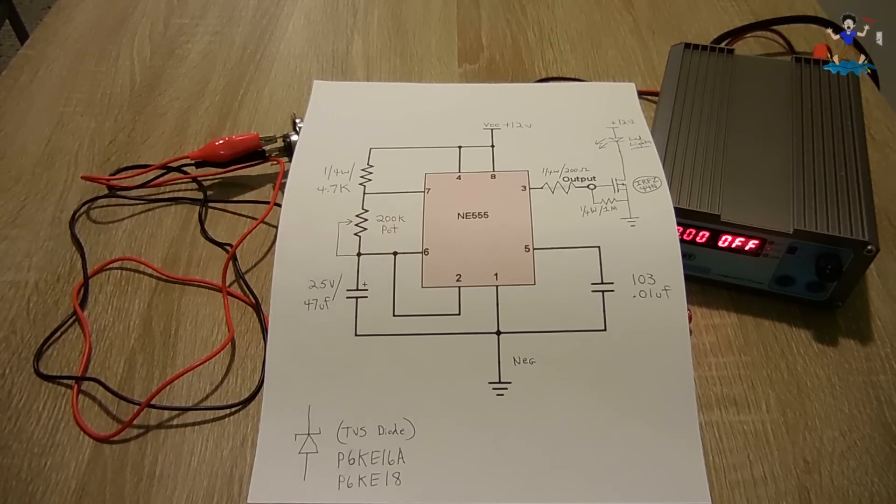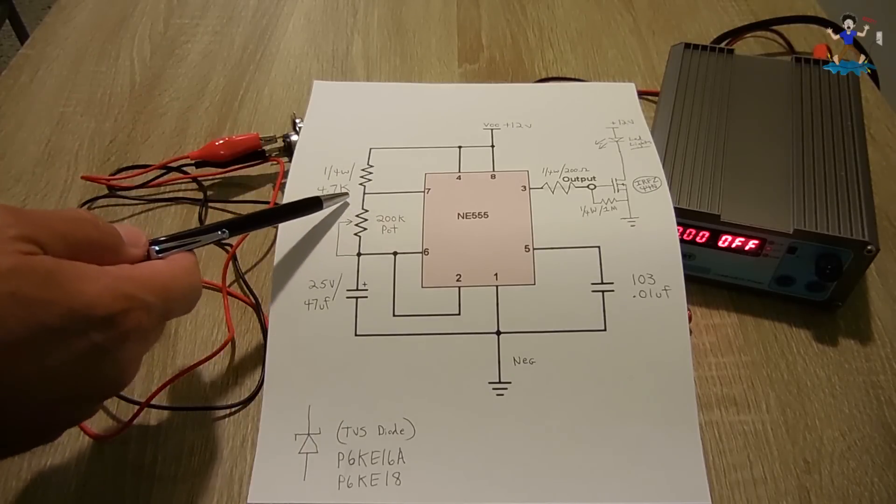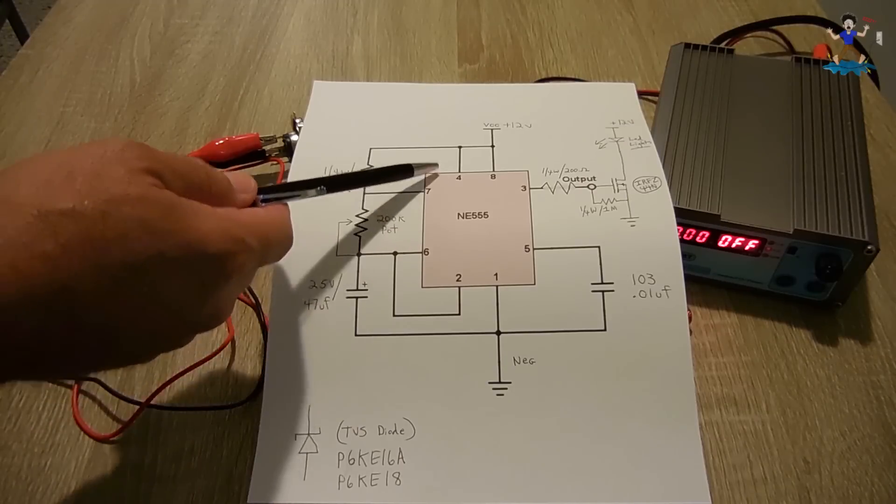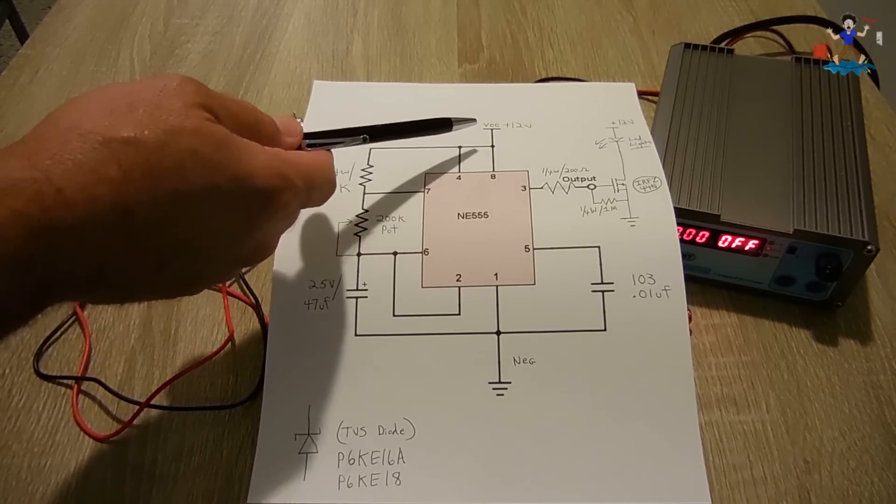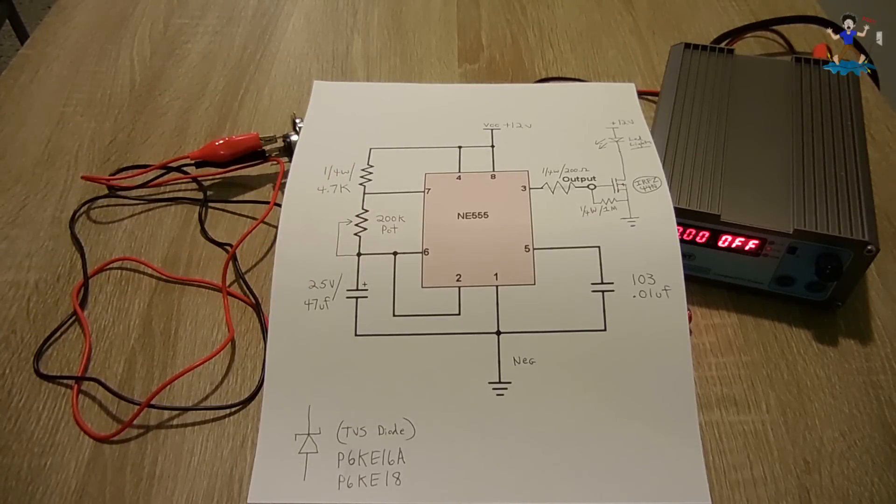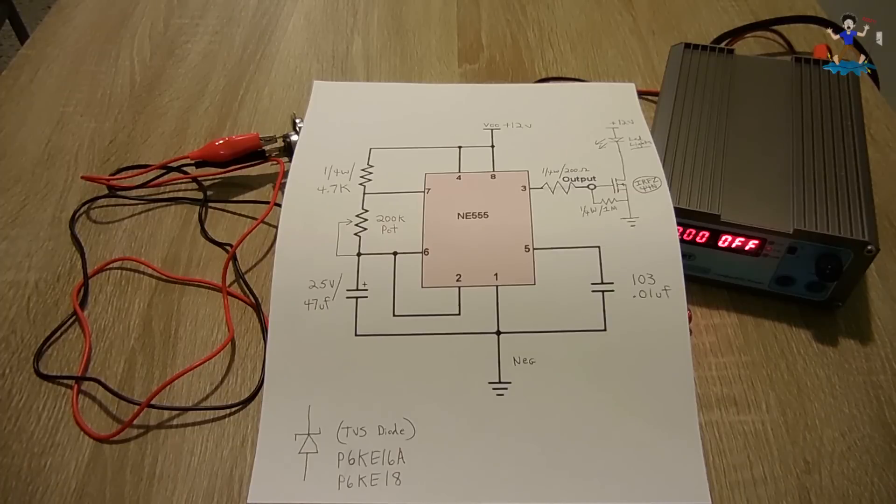Over here between pin 7 and pin 4, I have a 4.7K quarter watt resistor. Pin 4 and 8 are tied together. Over here, you have 12 volts to the positive rail. And down here, this is connected to the negative of the battery or the power supply.